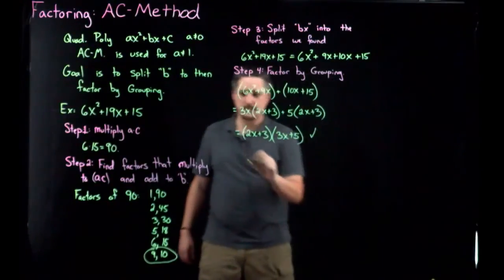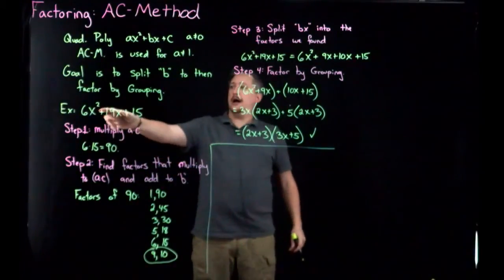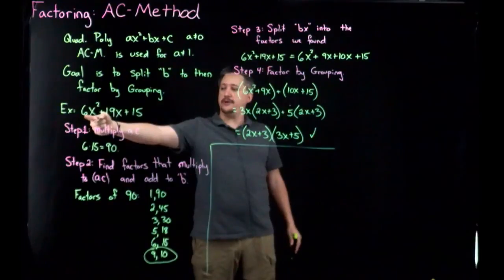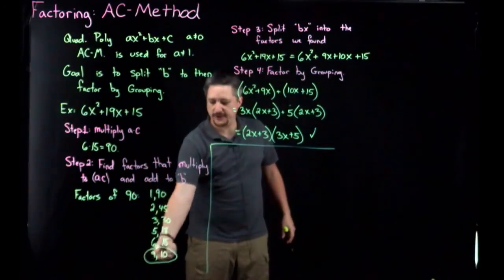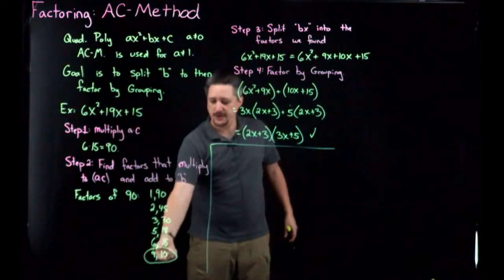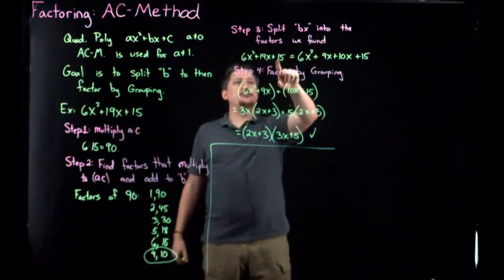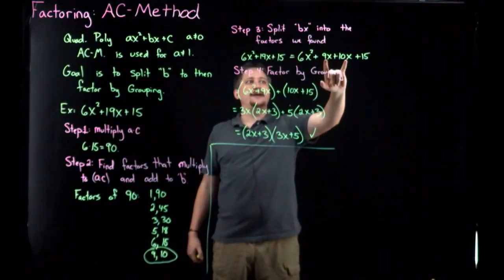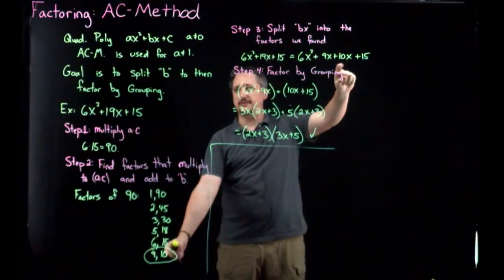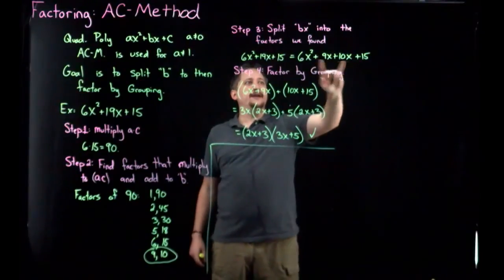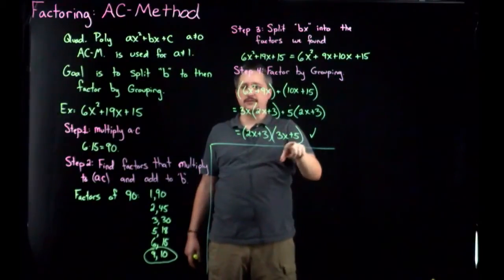Let me do a quick review. I started with something where A wasn't 1, so I multiplied A and C together to get a number, then factored that number until I found a pair that added to B — 9 times 10 is 90, and 9 plus 10 is 19. Then I took my original polynomial and split the B term as that pair of factors, going from 19x to 9x + 10x. Now with 4 terms I could group them in pairs and factor by grouping.